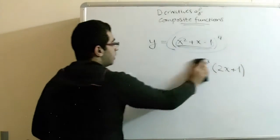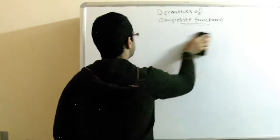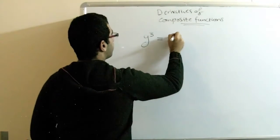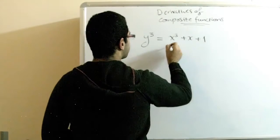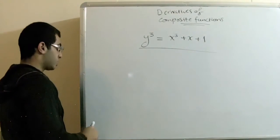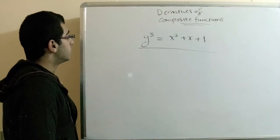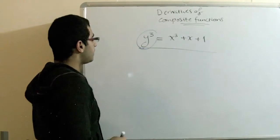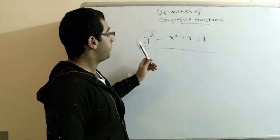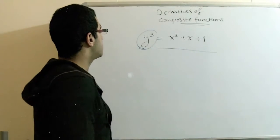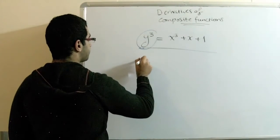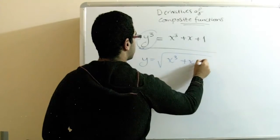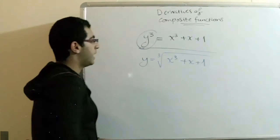We will have another example. If we have y to the power 3 equals x to the power 3 plus x plus 1, and we want to get the derivative of this. We cannot deal with y to the power 3 directly, so we will put a cubic root on both sides of our equation to get y equal to the cubic root of x³ plus x plus 1.